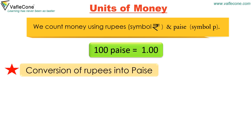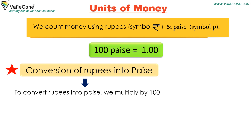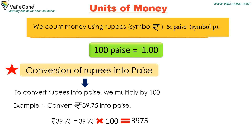Conversion of rupees into paise. To convert rupees into paise, we multiply by 100. For example, convert rupees 39.75 into paise. Rupees 39.75 is equal to 39.75 into 100, which is equal to 3975 paise.